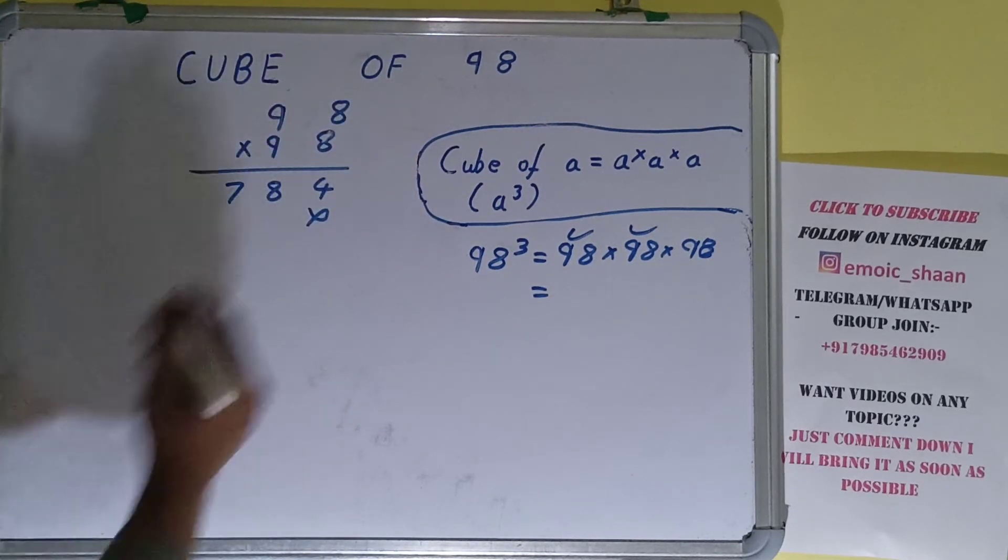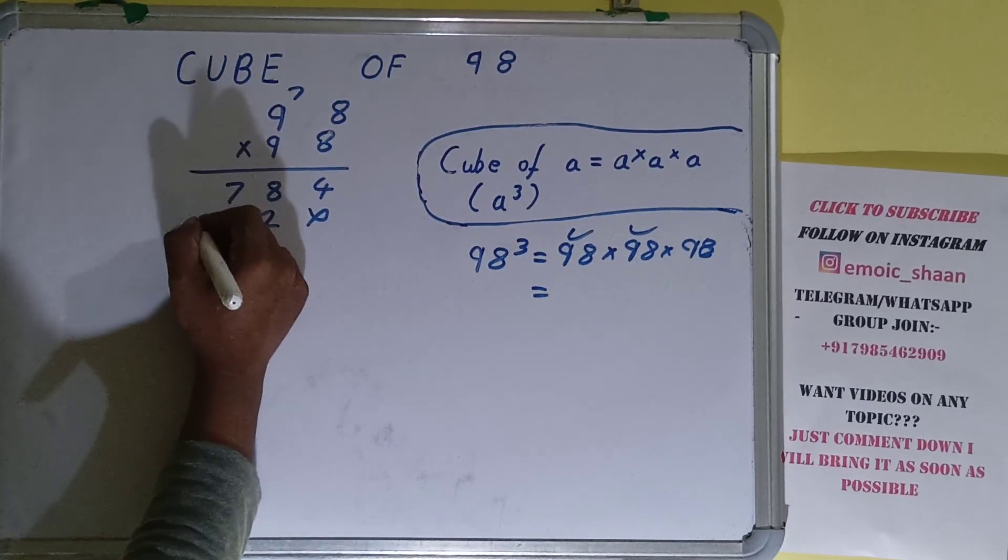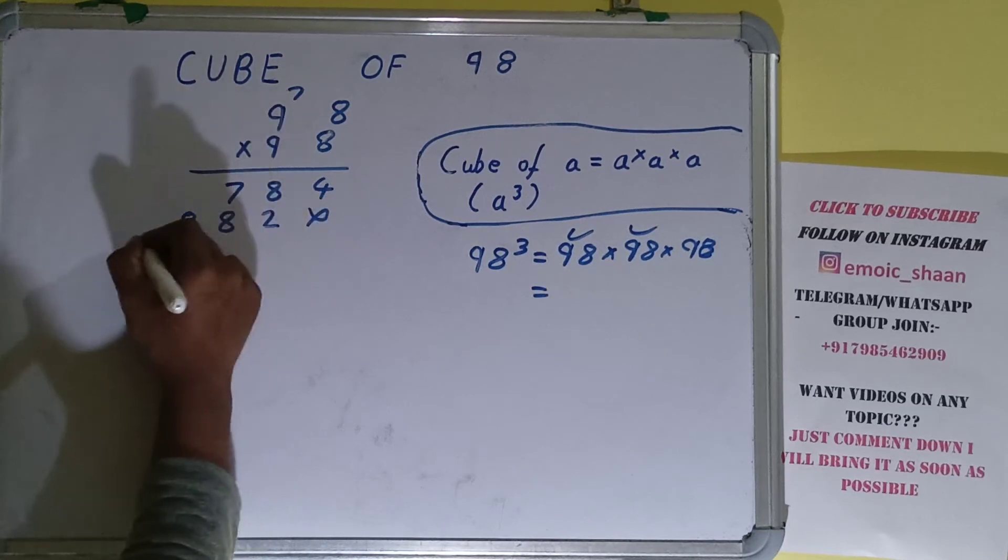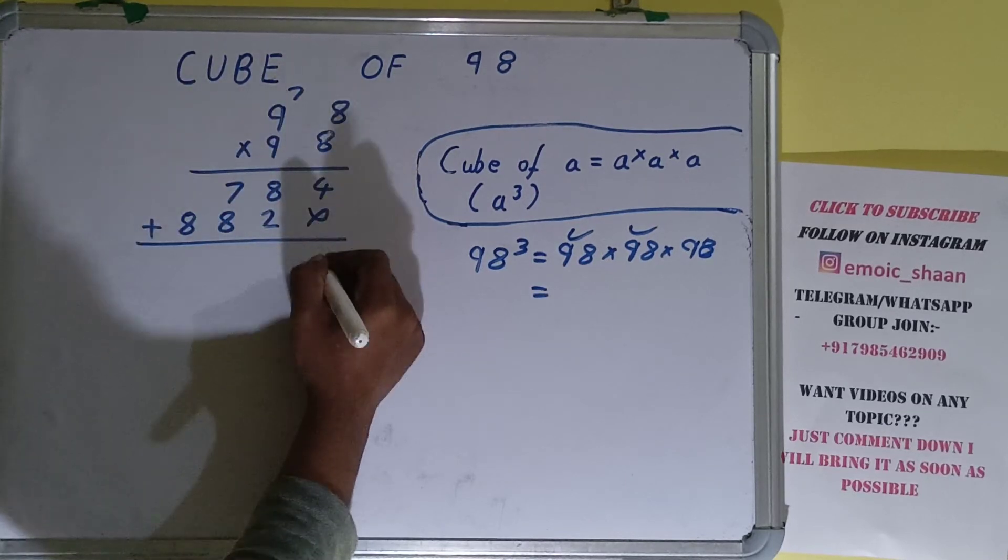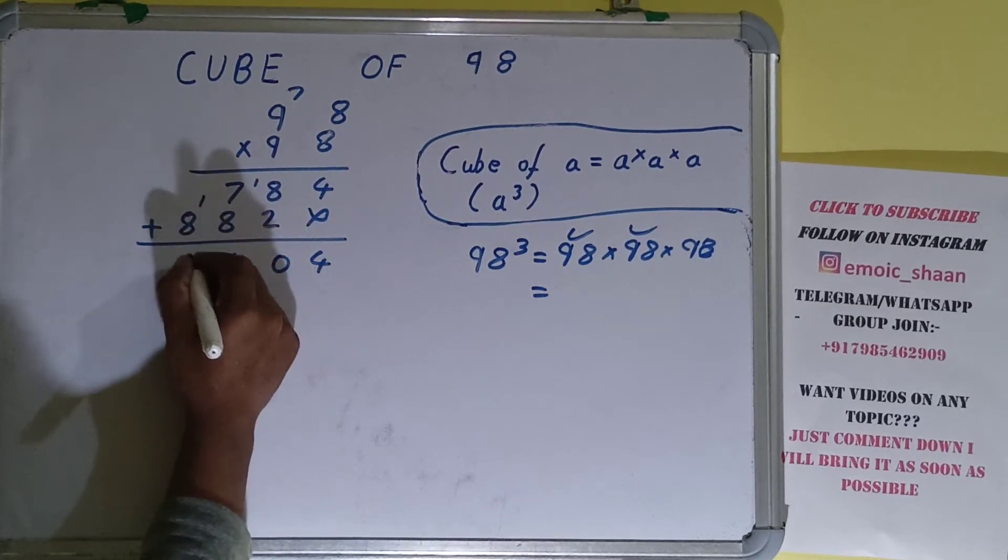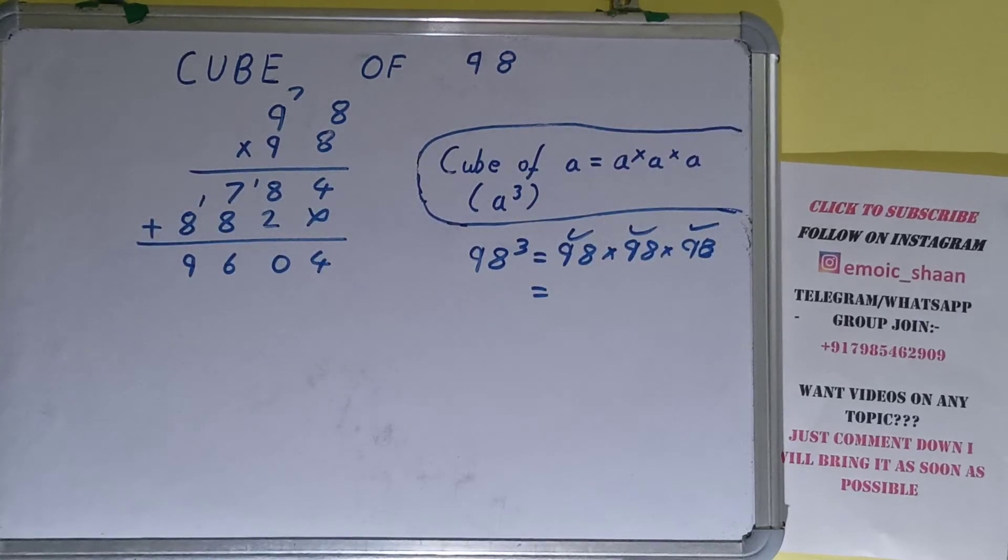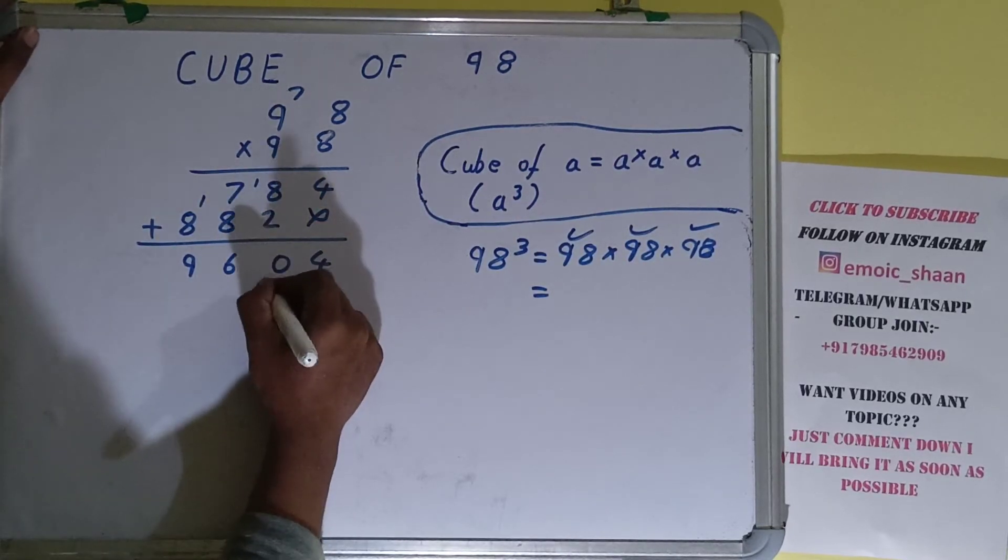Now this 9 times 8 is 72, 7 carry. 9 times 9 is 81 plus 7 is 88. Just add all this: will be 4, this will be 0, this will be 6, this will be 9. Now with this answer we'll be multiplying with the third term, that is 98.